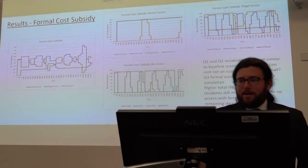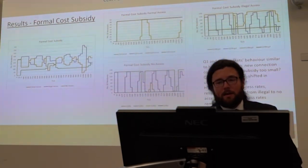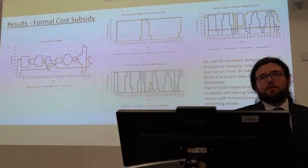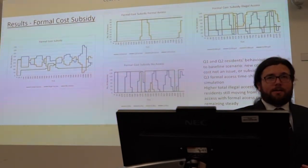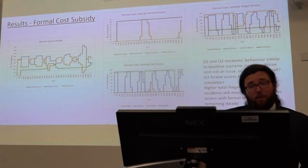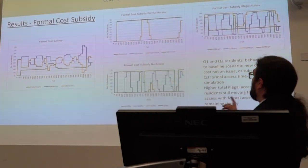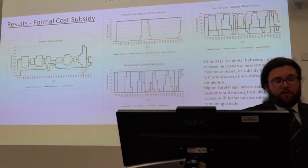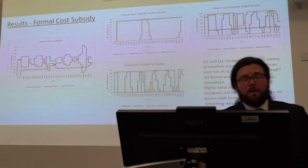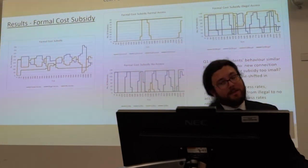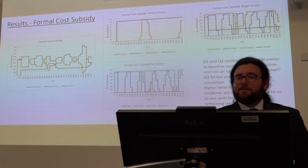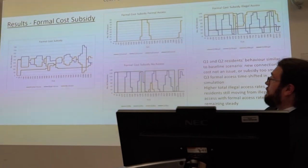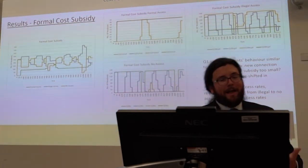Looking at the formal cost subsidy scenario, Quintile 1 and 2 residents' behaviour is quite similar to the baseline. Does this suggest the new connection cost is not the issue, or is the subsidy amount coded into the model too small? That's something I'm continuing to analyse. Formal access for Quintile 3 residents is time-shifted earlier in the simulation, suggesting affordability is higher and requires less capital accrual. We also see higher total illegal access rates, but formal access rates are remaining more steady.